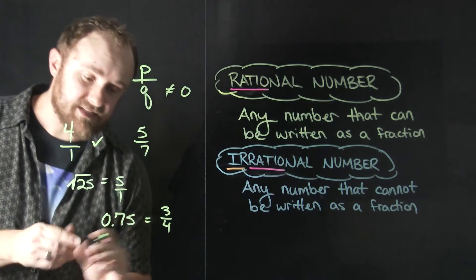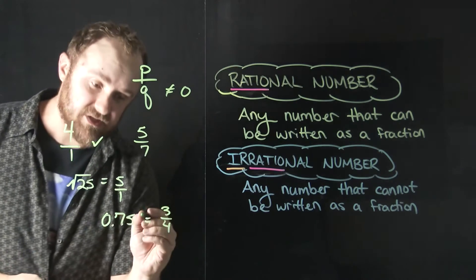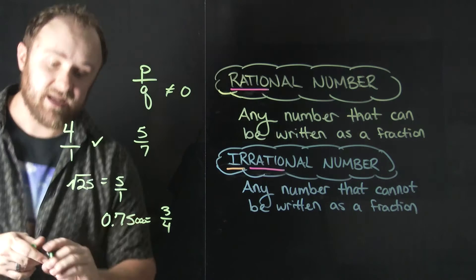But it's also true that this decimal here, it doesn't go on and on. It ends after that five. If I were to write more digits, the only digits I could add would be zeros. So this is called a terminating decimal.